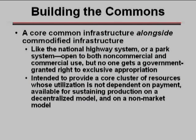What is it that we need to do in order to build this commons—this open component, this core common infrastructure for communications—that will allow each of us to have the minimal resources necessary to say whatever we want to whoever we want to say it to? We need a core common infrastructure alongside the commodified infrastructure—like the national highway system or a park system—that should be open both to non-commercial and commercial users alike, but where no one gets a government-granted right to exclusive appropriation. What it's intended to do is provide a core cluster of resources whose utilization isn't dependent on payment. It doesn't mean that market systems are always bad, but we have to reserve some cluster that is not systematically by law and policy tilted towards market exchanges as opposed to conversations.